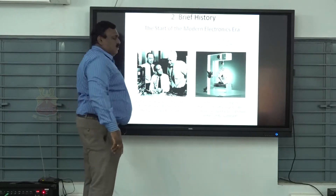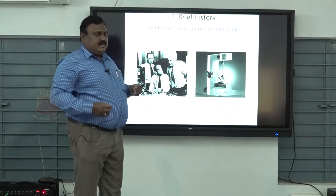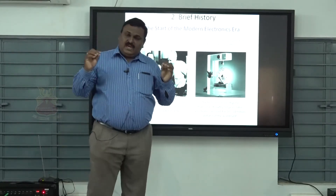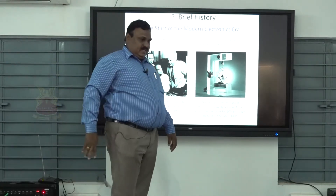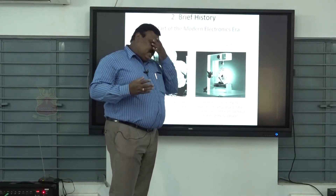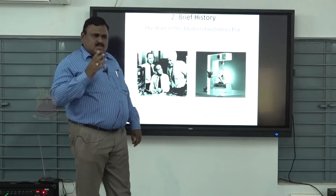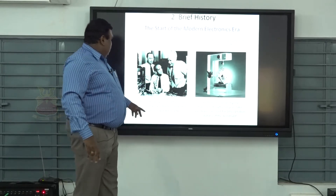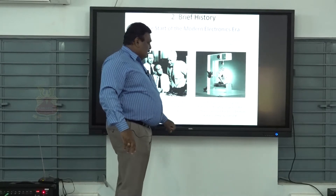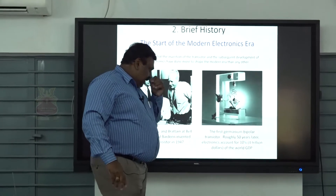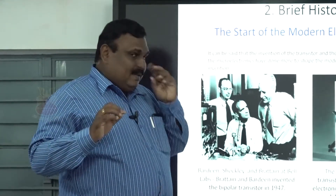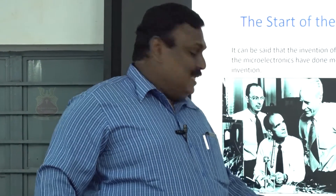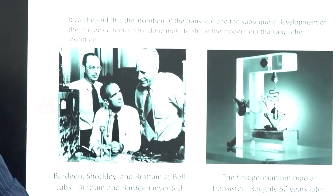Active and passive components are the electronic components we use in day-to-day life. What is the history of electronics? In those days, we were using vacuum tubes only. Before discovering semiconductive materials, vacuum tubes were used. One of the scientists discovered the Germanium bipolar transistor about 50 years ago. The first semiconductive material was discovered by Bardeen, Shockley, Brattain, and Bell Labs - the inventors of the Germanium bipolar transistor in the year 1947.